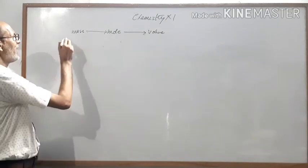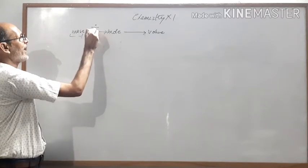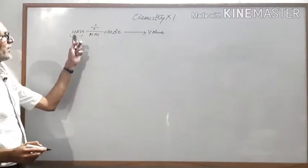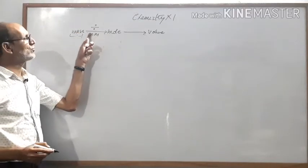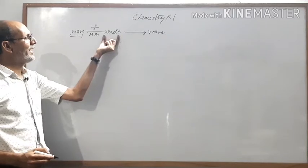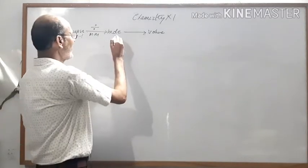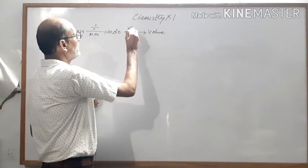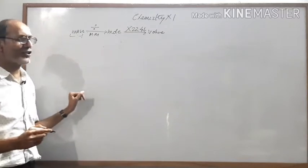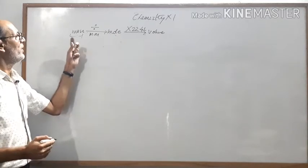Suppose you have a mass of any gas. That mass should be divided by its molecular mass. If you divide the gram mass of any substance by its molecular mass, it will be converted into moles. When you convert to moles and want to find the volume of that gas at standard temperature and pressure, multiply moles by 22.4 liters. This is the most important concept for the calculation of mass to volume.